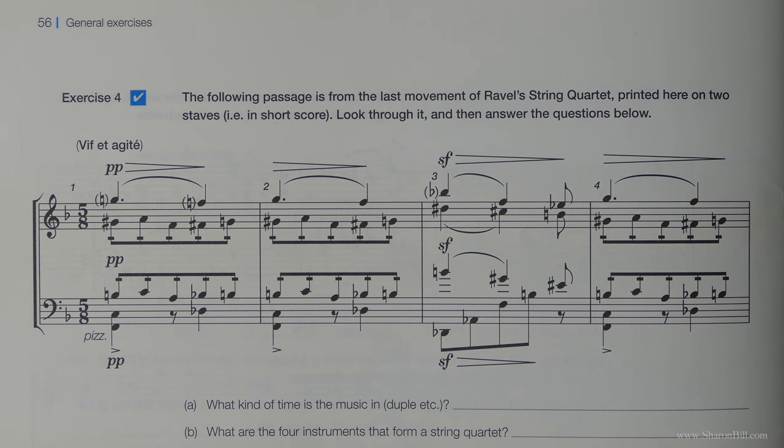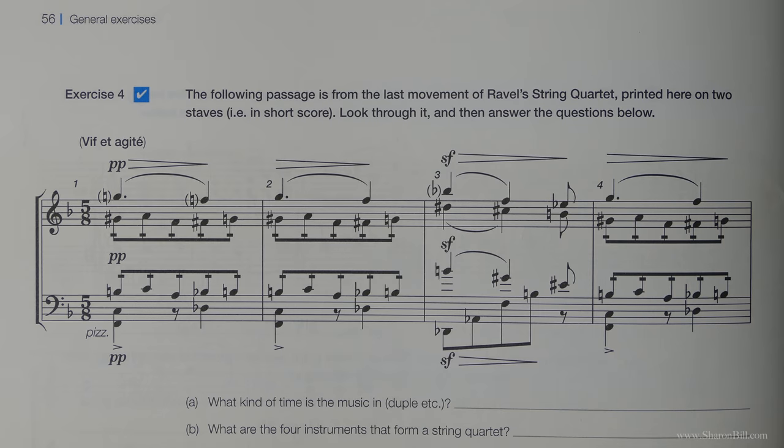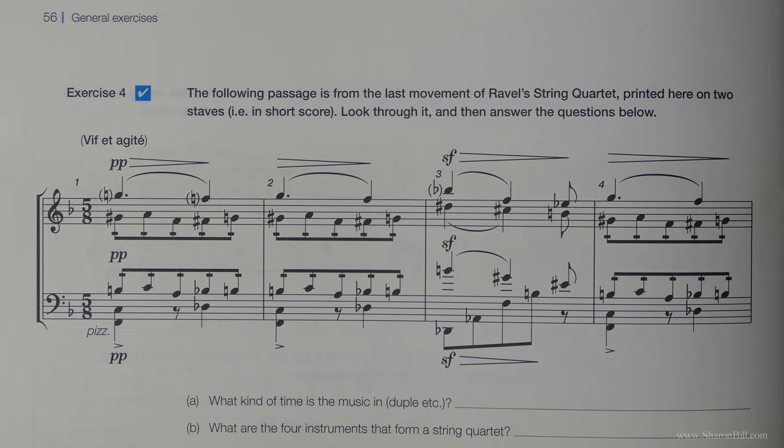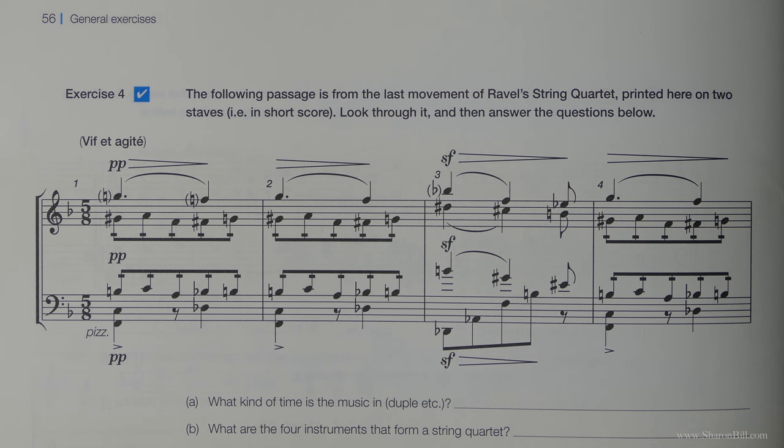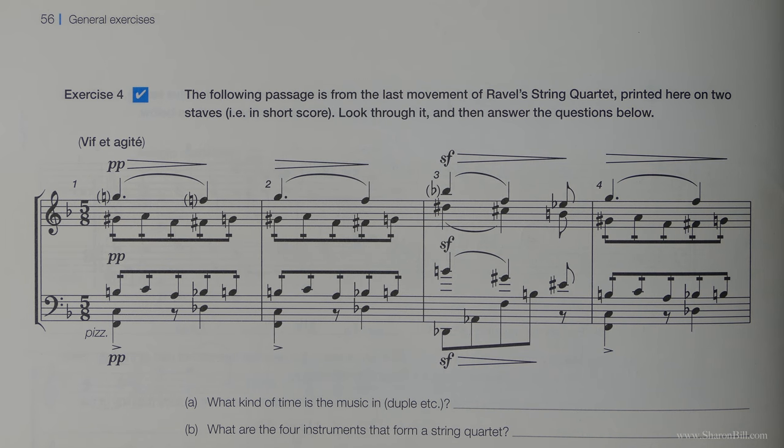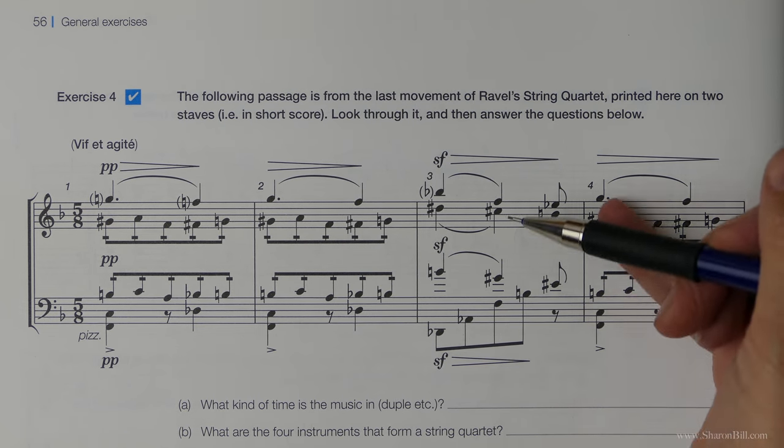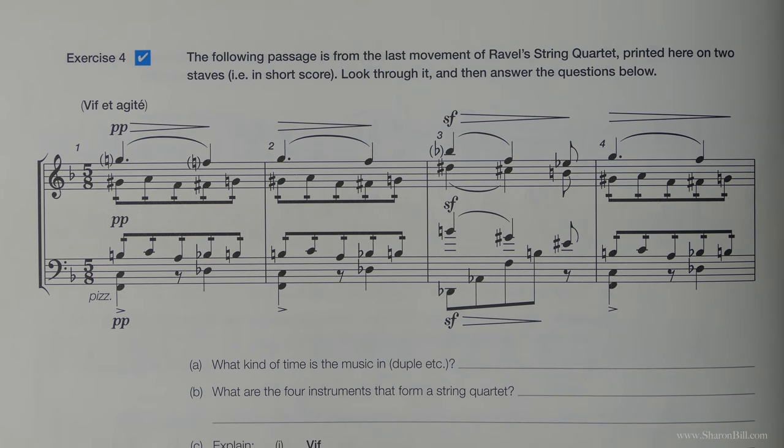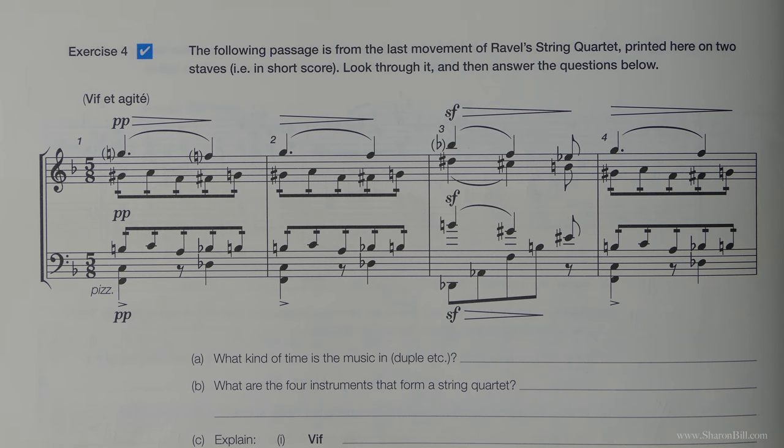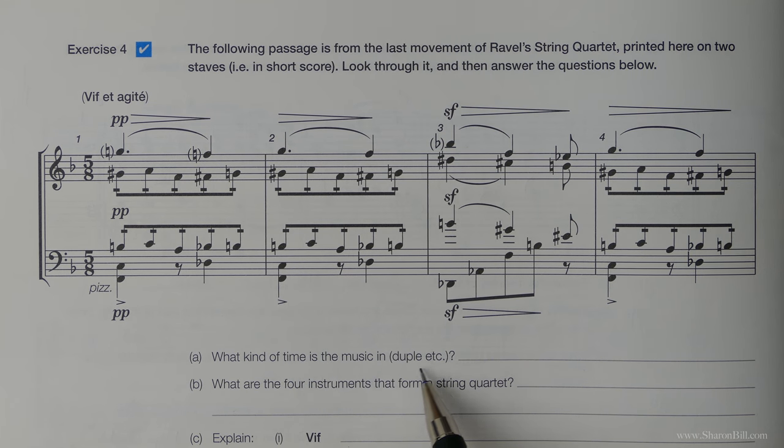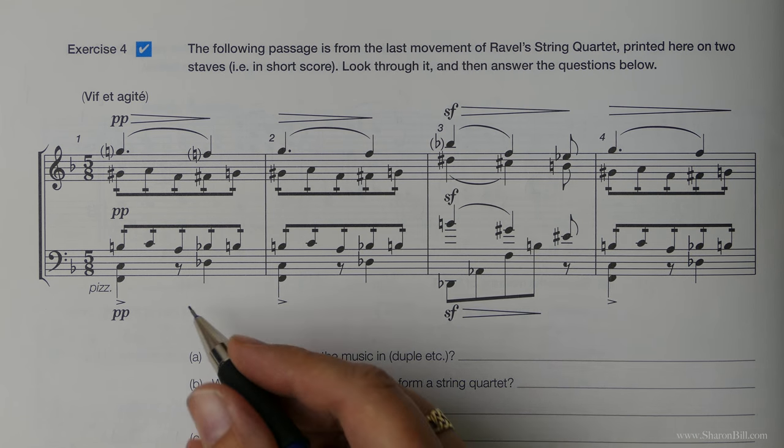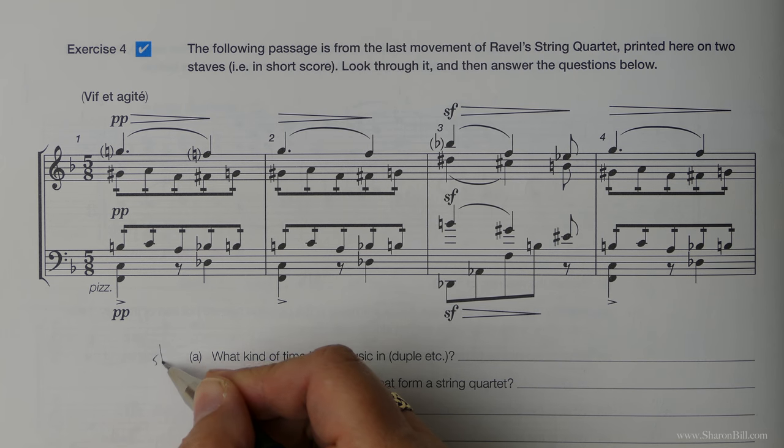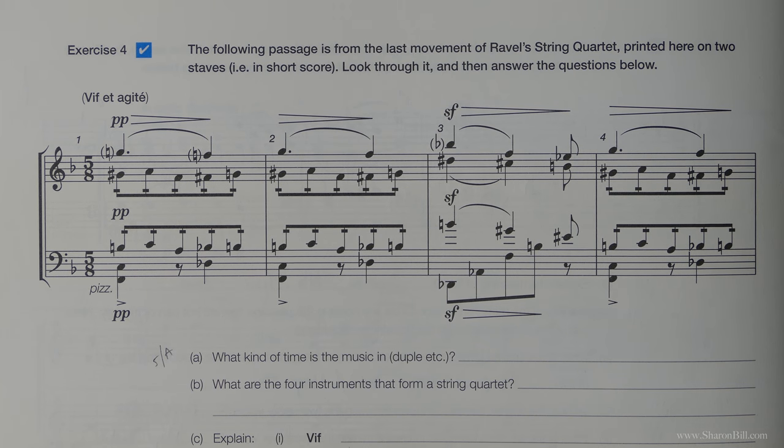I'll just give you little chapter headings to help you to find where to revert back to, to find the necessary information to answer these questions. All of these questions on this exercise are referring to this little bit of music here. We're asked what kind of time the music is in. They've given us a bit of a clue what they're after. You'll find this in grade five, section A.